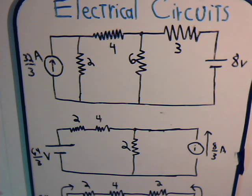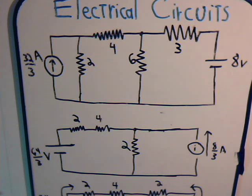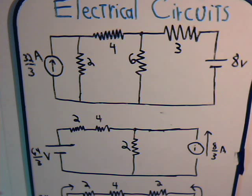There are different manipulations we can do with the different sources in the circuit that might make it amenable to one technique or another, in order to make it easier to analyze. That's all we had to say about this video — just a demonstration of how source conversions can sometimes make circuits easier to analyze. Join us in the next video where we're going to start solving problems using the node analysis technique.